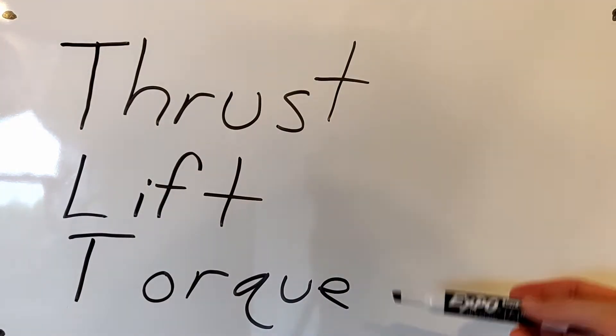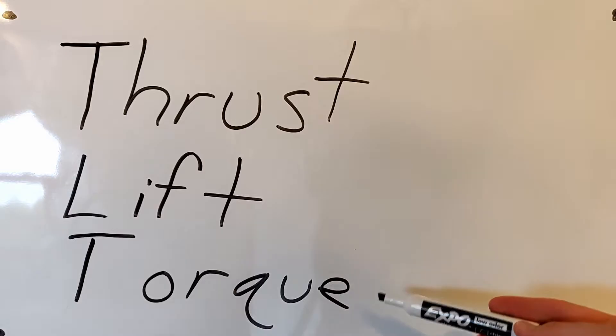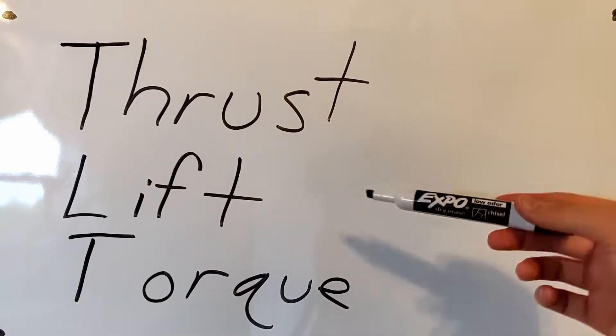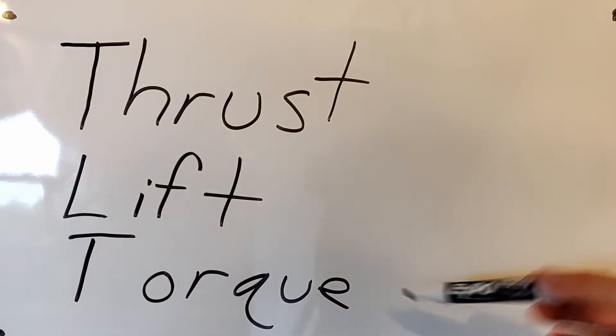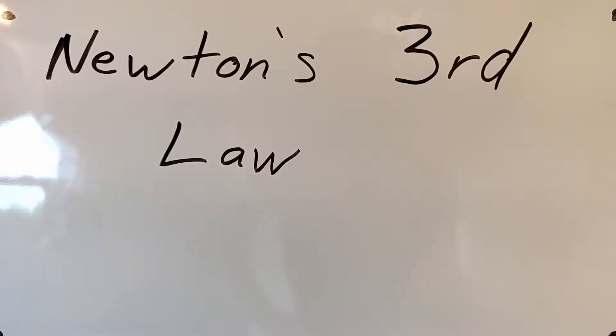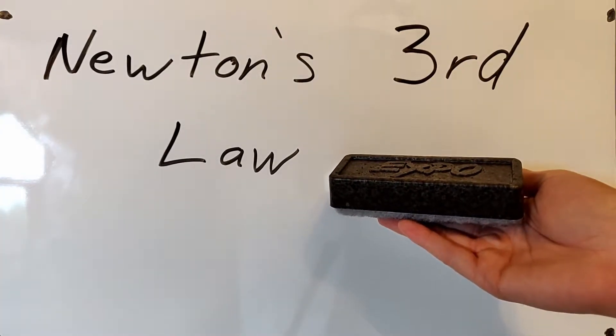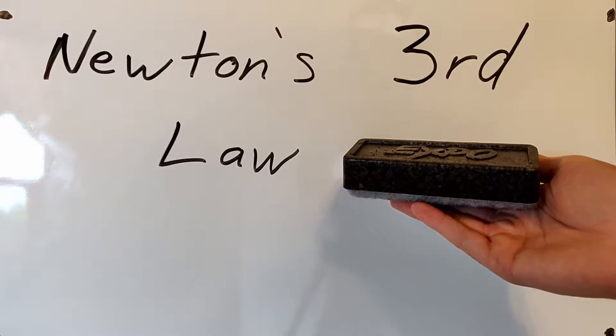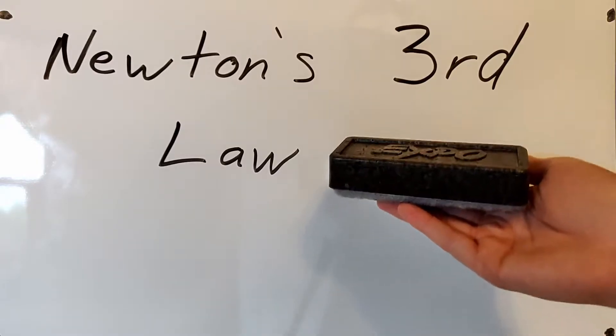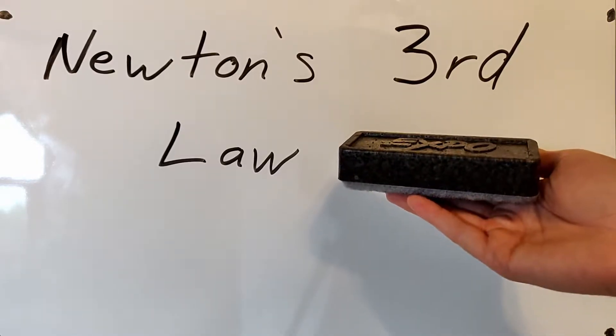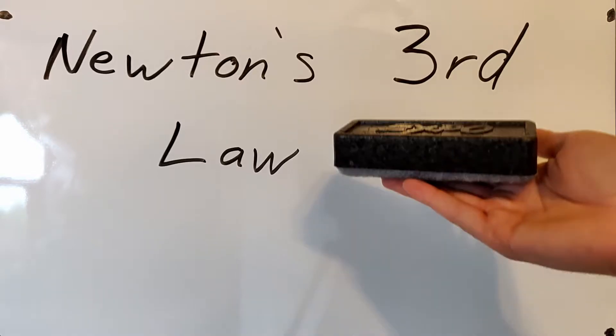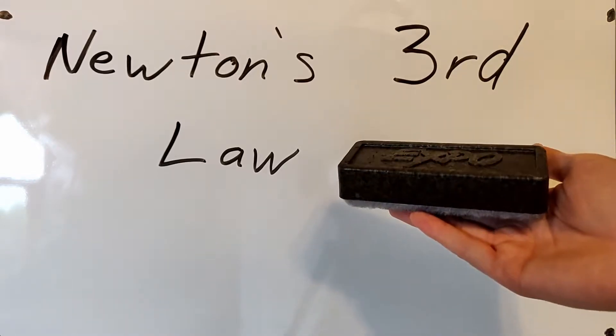Torque is a twisting force that tends to cause rotation. And I think people might not have as good of an understanding of torque as they do these other two. So let's talk about that a little bit more. Newton's third law says that for every action there is an equal and opposite reaction. An example of this would be holding an eraser. For every action, the weight of the eraser pushing down on my hand, there is an equal and opposite reaction. My hand pushing up on the eraser. And this keeps it still.